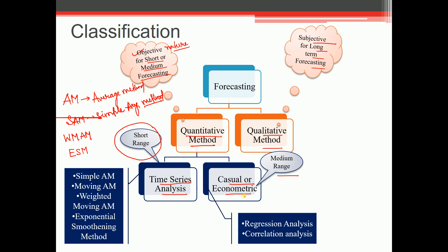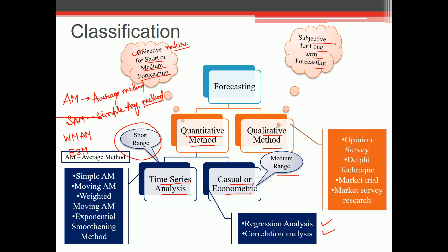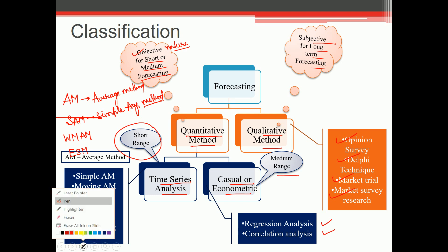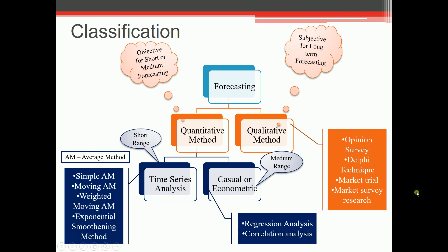This casual or econometric is further classified under two which is called regression analysis and correlation analysis. So these two methods are used for medium range forecasting. So we have studied this classification. Please do remember this particular chart because many questions do come up from this particular chart. I will show you one example. And one more thing, we have qualitative methods - this is qualitative method. You can have opinion survey, Delphi technique, market trial, market survey research. Please take the snapshot and copy this down in your notebook and learn it.